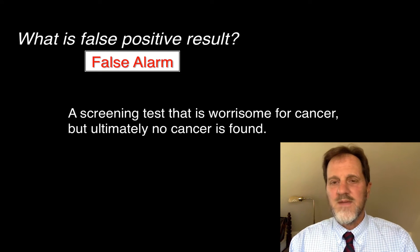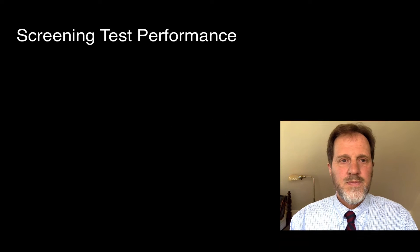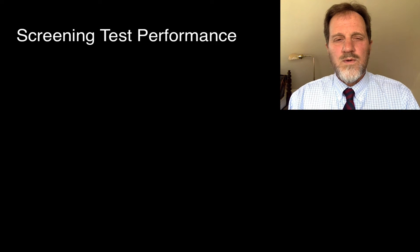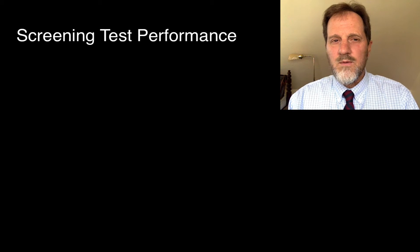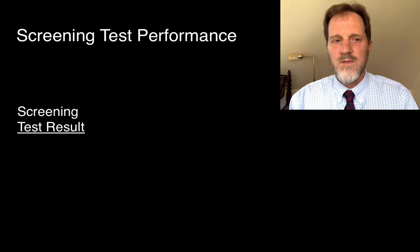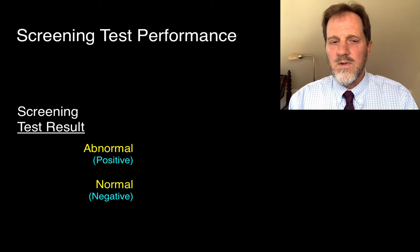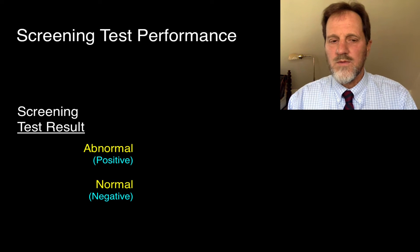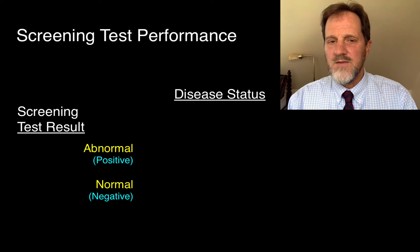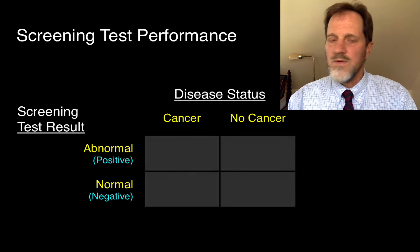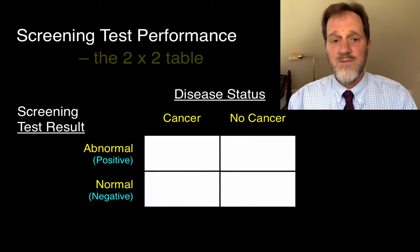To understand where the word "false positive" comes from, you have to think about how we think about screening test performance. We think about a screening test result as falling into one of two categories: either abnormal or normal. An abnormal is considered a positive test result and normal is considered a negative test result. And then we consider the actual disease status of the patient — either the patient has cancer or doesn't have cancer. That leads to two columns and two rows, and we call this the two-by-two table.